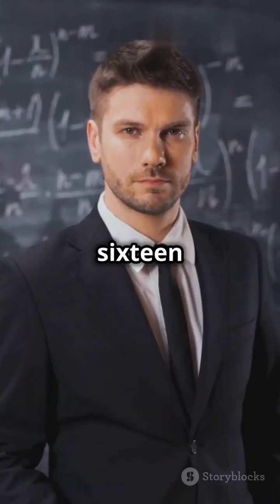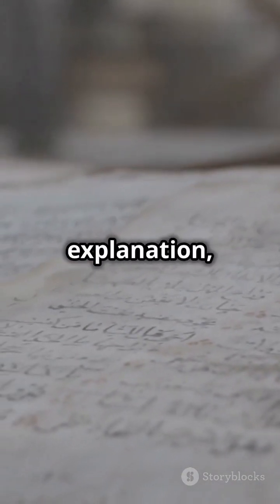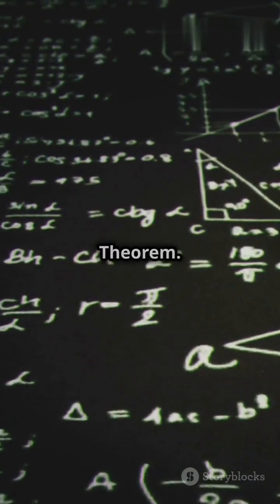Alright, picture this. Some dude in 1637 drops the hardest math problem of all time, says he solved it but then just disappears. No proof, no explanation, just straight up gaslighting the entire math world for 358 years. That's Fermat's Last Theorem.